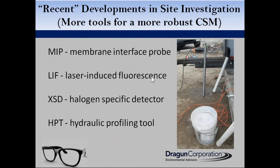The MIP is one of the tools you can use. LIF (laser induced fluorescence) allows you to find free product like gasoline or free-phase TCE in the subsurface. The XSD (halogen specific detector) also operates like this type of probe and allows you to detect high concentrations of chlorinated compounds like TCE. We use a combination of these tools to quickly move vertically and laterally to locate sources and define the extent of groundwater plumes.